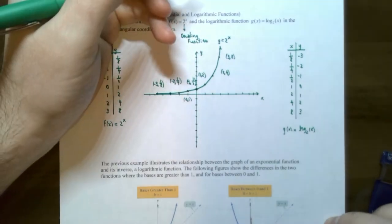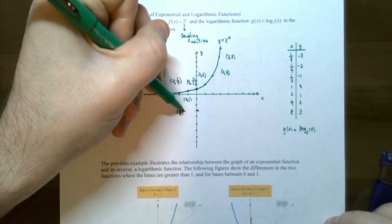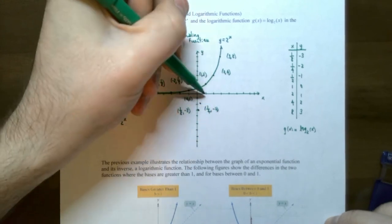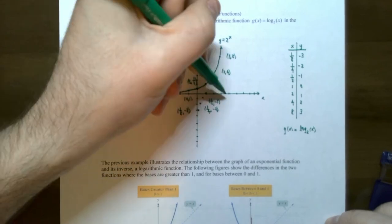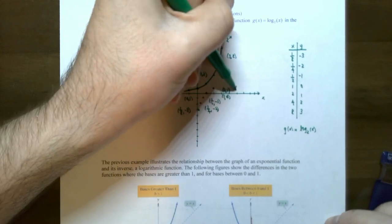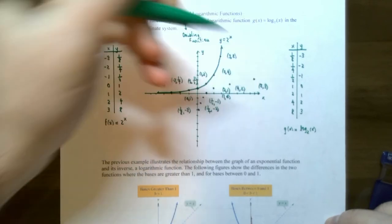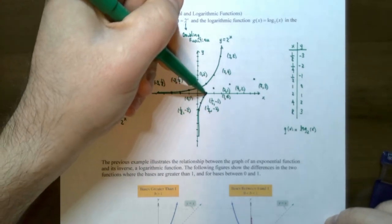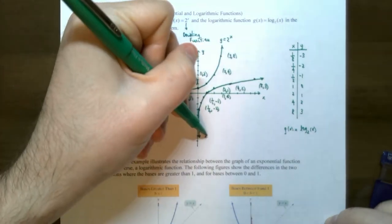If we graph these points: (1/8, -3) barely to the right of the y-axis; (1/4, -2); (1/2, -1); (1, 0); (2, 1); (4, 2); and (8, 3). The graph gets really close to the y-axis but does not touch it, and the function is increasing as you go to the right. This is log base 2 of x. Notice that these two graphs are symmetric — reflections across the line y equals x. That's the property involving graphs of two inverse functions.